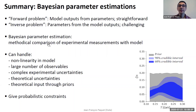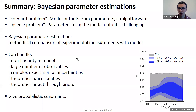Bayesian parameter estimation is a systematic way to constrain your parameters given experimental data, by folding in your technical uncertainty and your experimental uncertainty. It's usable no matter how nonlinear your model is, and even if you have a large number of parameters or observables. So it's very flexible and very powerful, and the result will always be a probabilistic constraint that you have to find how to best visualize.